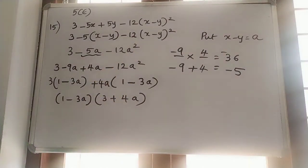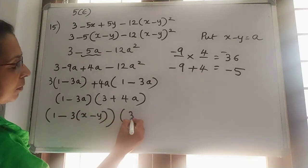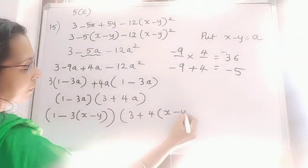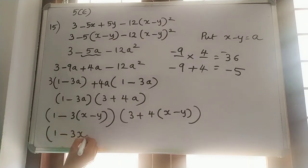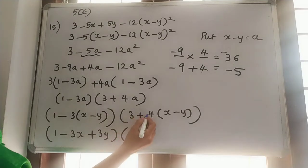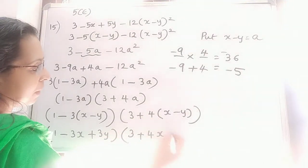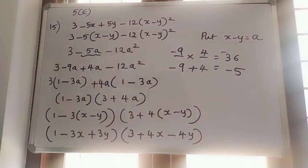Replace a as x minus y. So it will be 1 minus 3 into (x minus y), and 3 plus 4 into (x minus y). Expanding the brackets: 1 minus 3x plus 3y into 3 plus 4x minus 4y. That is our final answer.